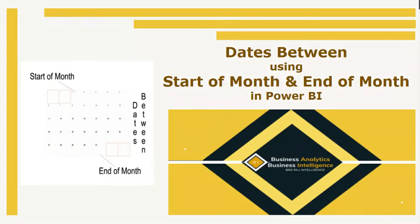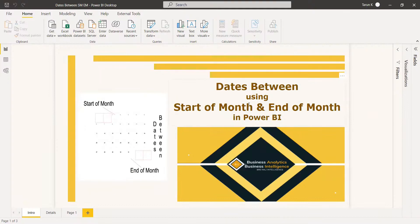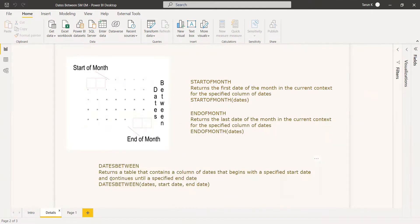Hello, welcome to this video. In this video we are going to find the DATESBETWEEN DAX function using another two DAX functions: STARTOFMONTH and ENDOFMONTH. DATESBETWEEN returns a table that contains a column of dates that begins with a specified start date and continues until a specified end date. So if you use DATESBETWEEN you need to give a start date and an end date.